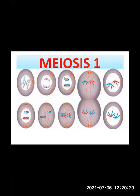Now look at the diagram while I am explaining. A haploid cell is a cell which has only one set of chromosomes. In human beings, the haploid chromosome number is 23.